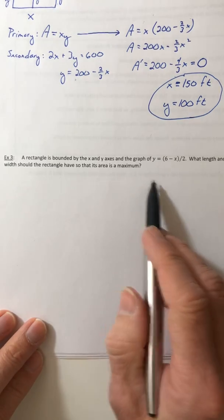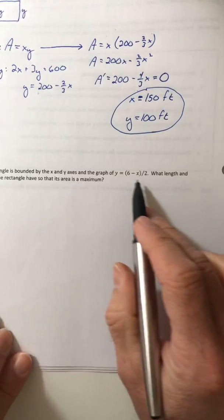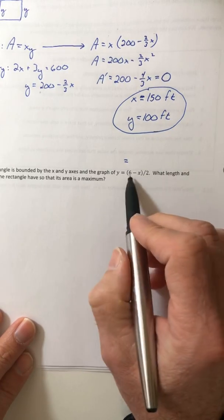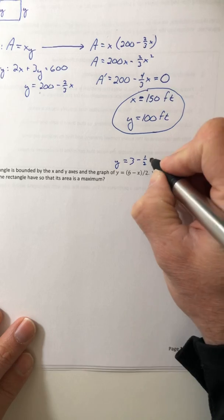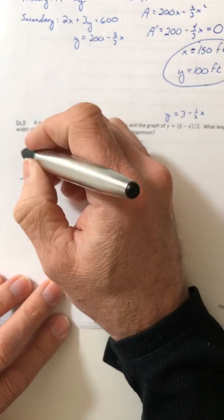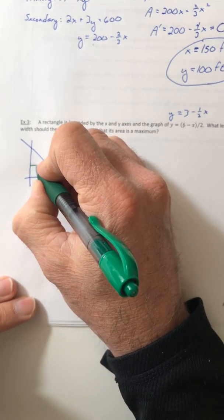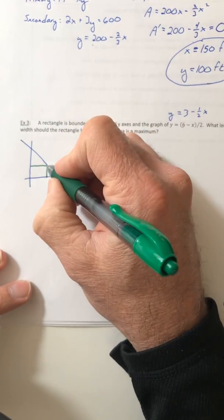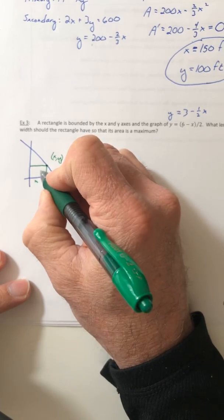Okay, so let's try example three. So a rectangle is bounded by the X and the Y axis and the graph of Y equals six minus X all divided by two. Well, just split it. Six over two is three. Negative X over two is like negative one half X. That's a little bit easier to kind of deal with. So here's your line. And here's your rectangle. So it's bounded by the X and the Y axes and also the line. So the corner is hitting the line at the point X comma Y. So that means the base is X and the height is Y.